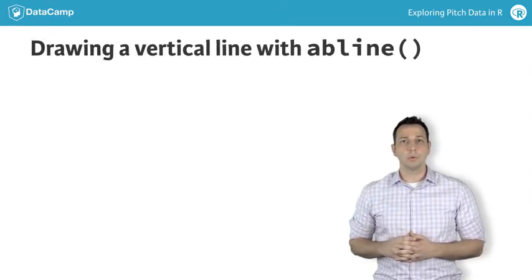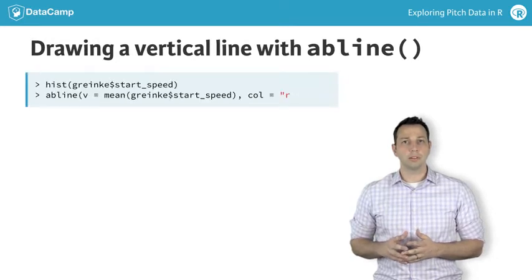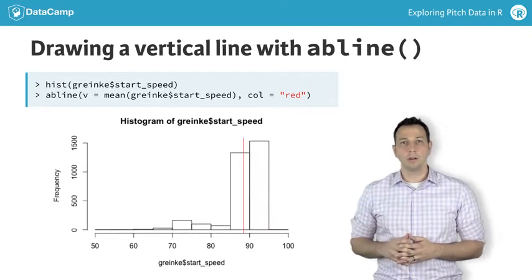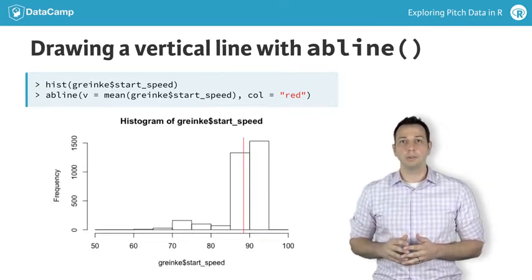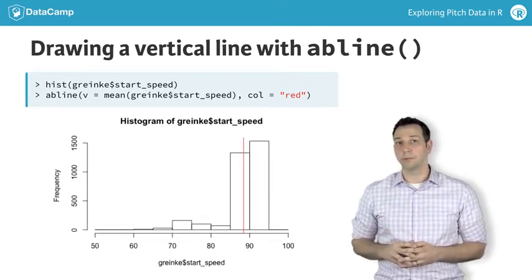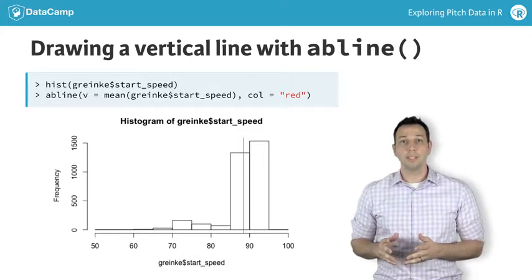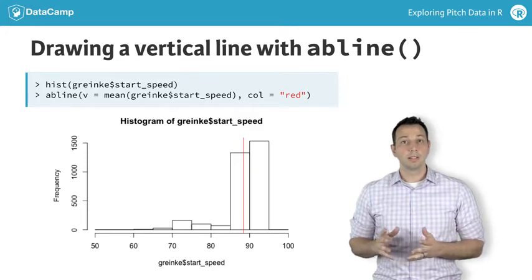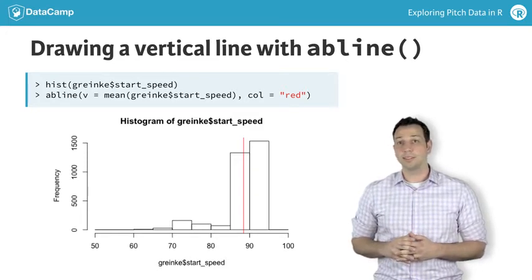You can also indicate where the overall average start speed is on your histogram using the abline function. In this case, you'll want to tell R to draw a vertical line using the V equals parameter. We want to make V equal to the mean start speed in the Greinke dataset. Let's also color the line red so it's easy to see on our histogram.